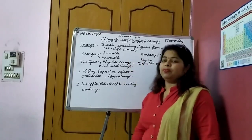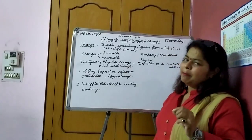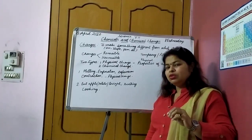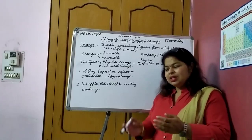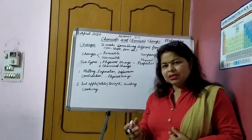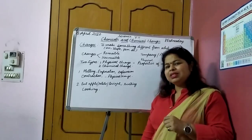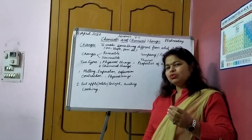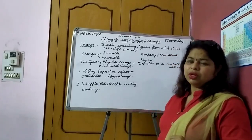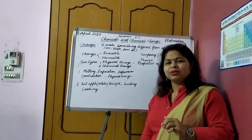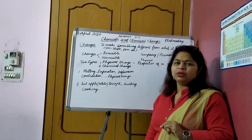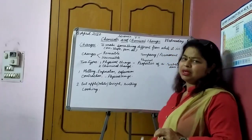Let us go to another example we discussed: curdling of milk — converting milk into curd — is again a chemical change. Just imagine your mother wants you to drink milk. But if she says take this curd — is it the same property, or is it different in taste and appearance? Though the color may be white, the taste of milk and curd is different. Milk is used to make tea — can you make tea out of curd? No. Because the chemical properties of milk have changed. Milk is now converted into a sour substance called curd. This is how we differentiate between physical and chemical change.